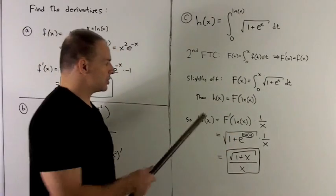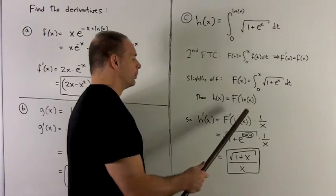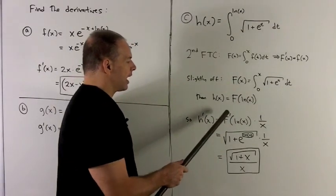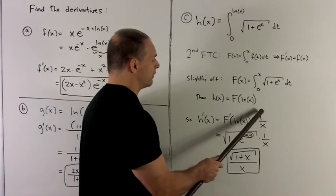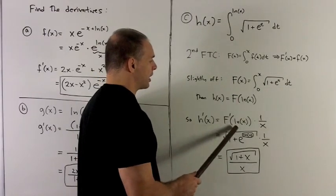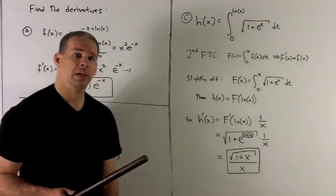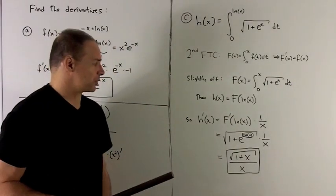Now I can get to work. This is just a chain rule. So h prime of x is equal to F prime evaluated at natural log of x times the derivative of the inside. Derivative of natural log of x is 1 over x. And now I can just start pulling things apart.